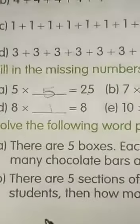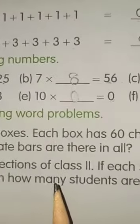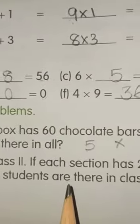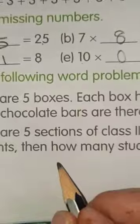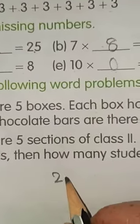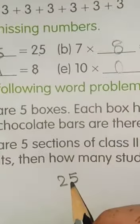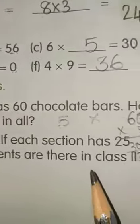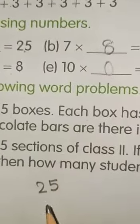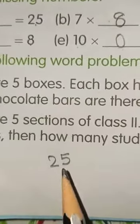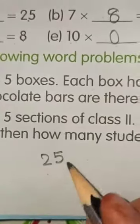Next question. There are 5 sections of class 2. Each section has 25 students. Children, each section has 25 students. Then, how many students are there in all? There are 5 sections of class 2. And each section is having 25 students. So, here you have to multiply 5 with 25.